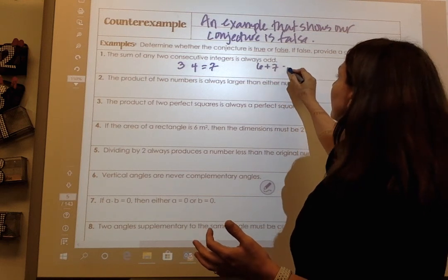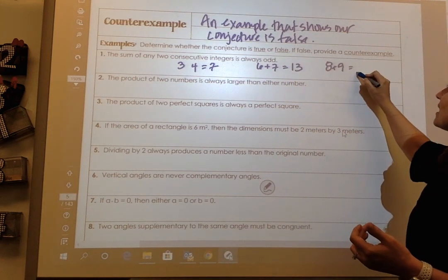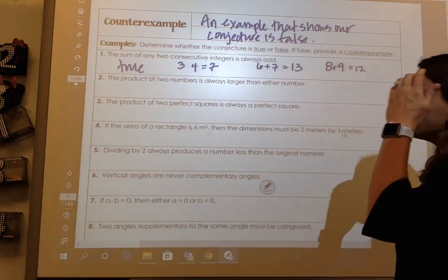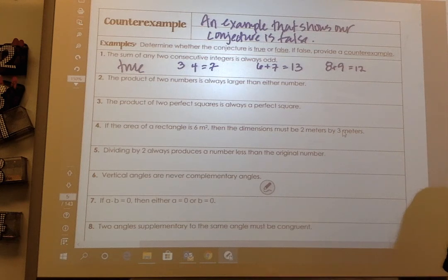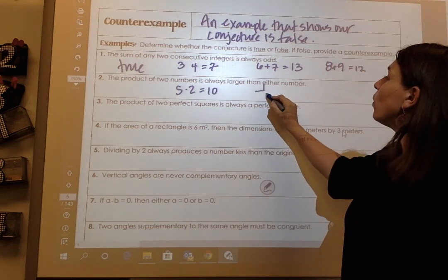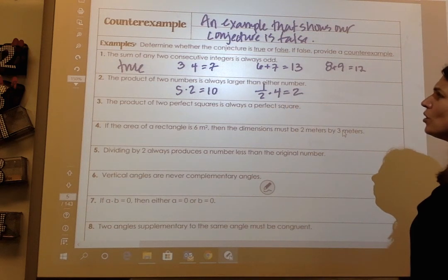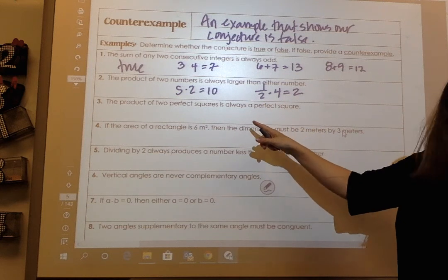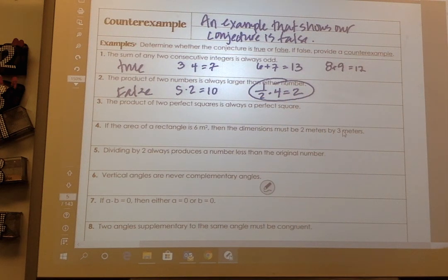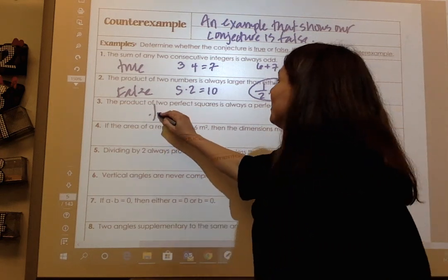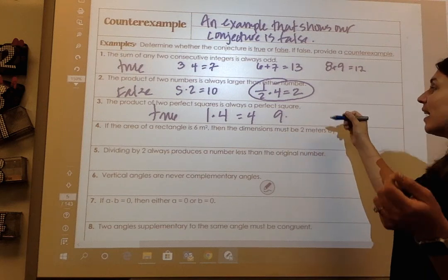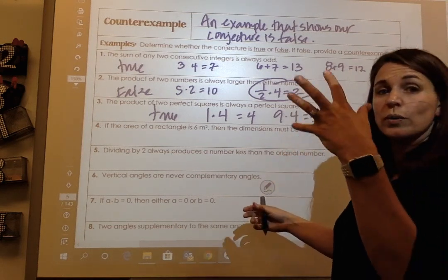Number two: the product of two numbers is always larger than either number. Well, if I have 5 times 2, that's true, that's equal to 10. But what about if I have one-half times 4? That's equal to 2. So that's not true. That's not true. So that is going to be false. And I've proved it right there. Number three: the product of two perfect squares is always a perfect square. That is true. That is true. Absolutely true. So 1 times 4 is 4, and then if I take 9 times 4, it's going to be 36. So perfect squares will always equal another perfect square.